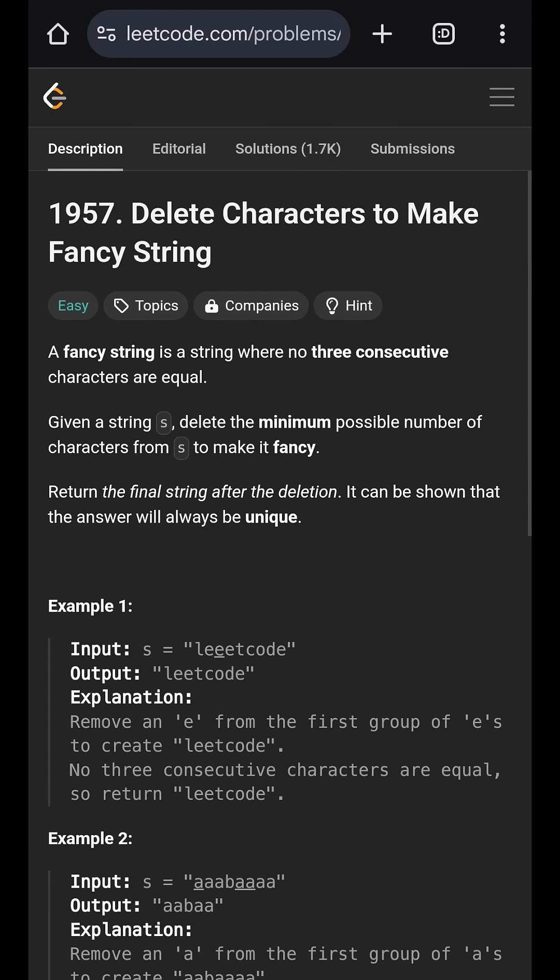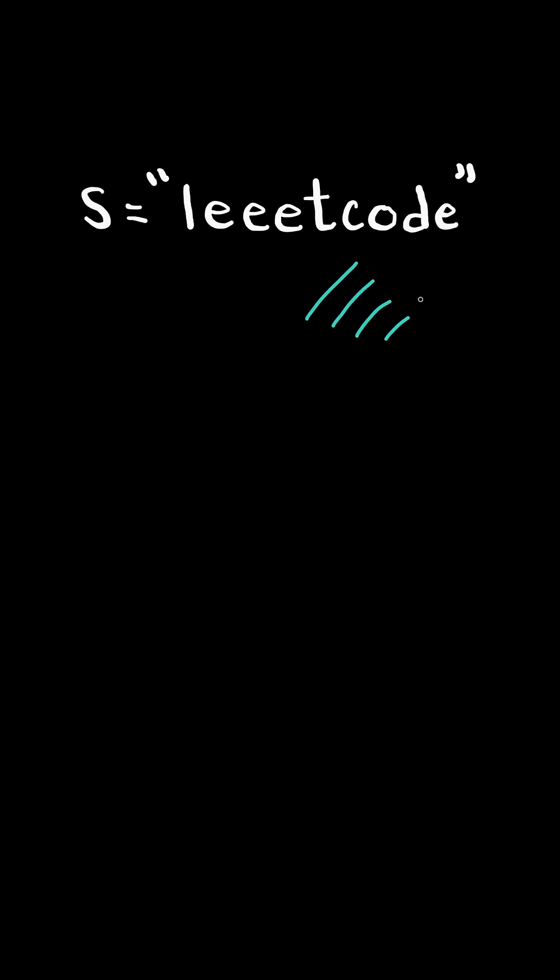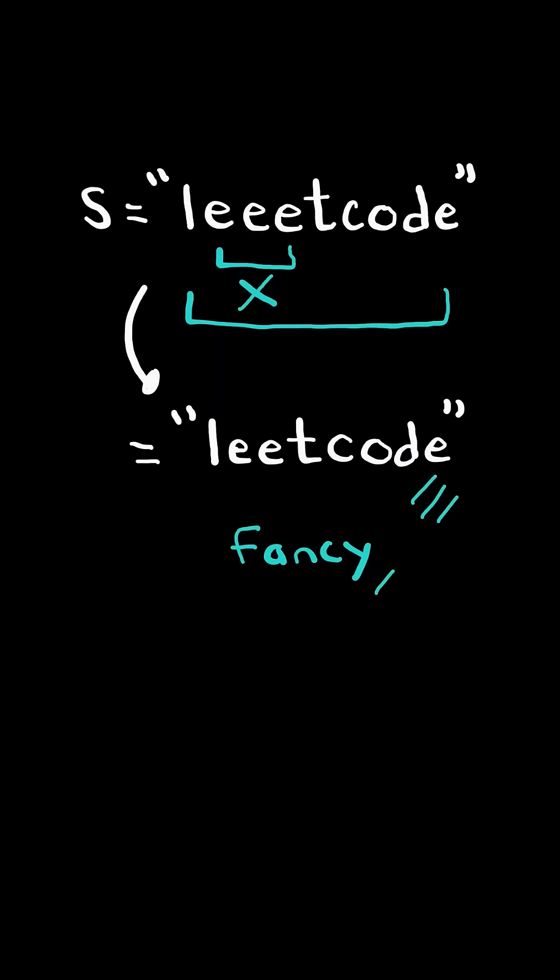Delete characters to make fancy string. Given a string s, a fancy string is a string where no three consecutive characters are equal. We want to make the string fancy by deleting characters such that there are no three consecutive characters left.